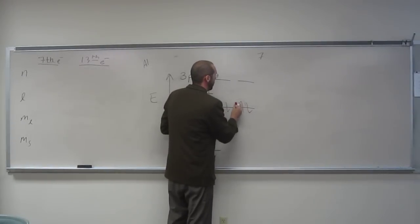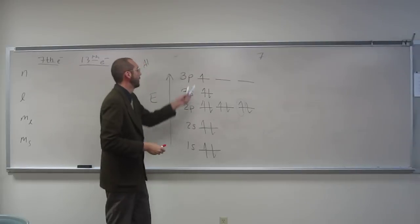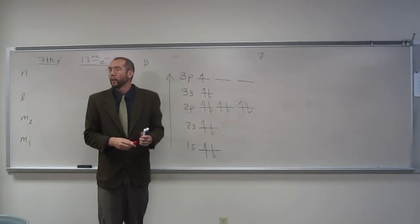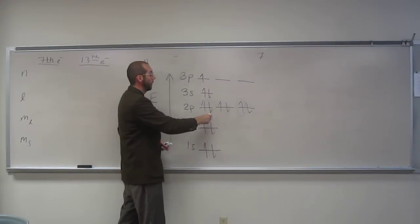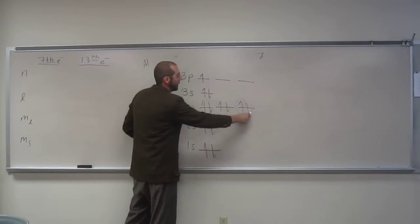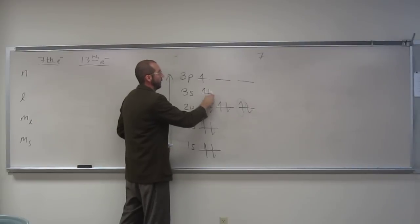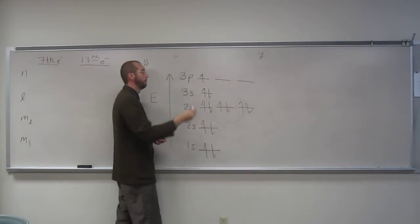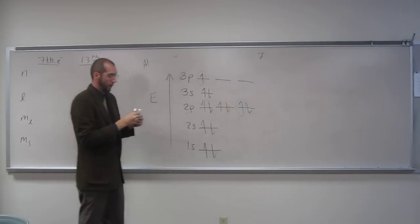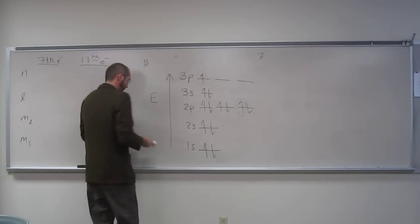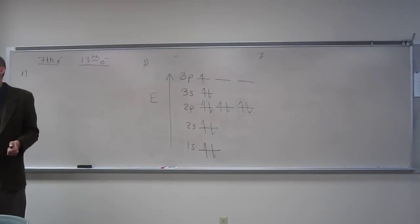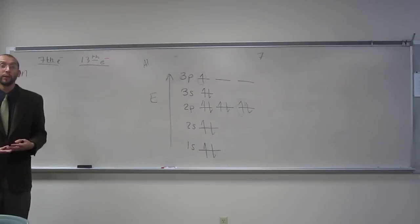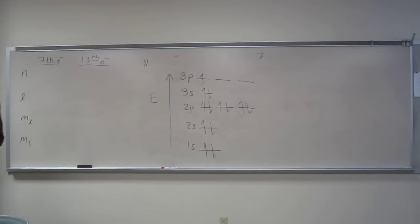So the blue one is 7, and then the 13th one is going to be the last one in. So, 7, if you want to count them with me, 8, 9, 10, 11, 12, 13, right? And remember, we are, in this class, going to designate the first one going in as the positive, and the second one going in as the negative one.